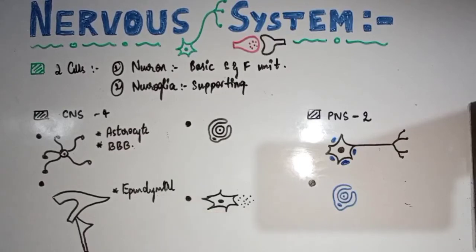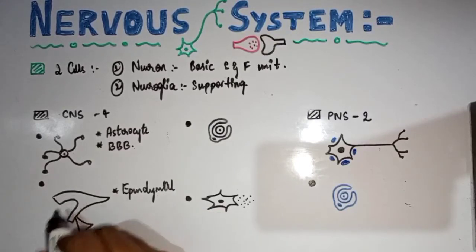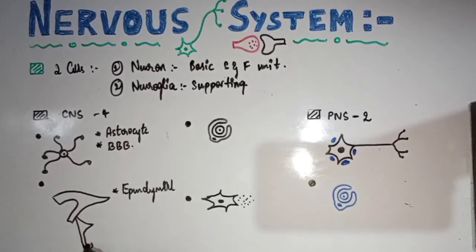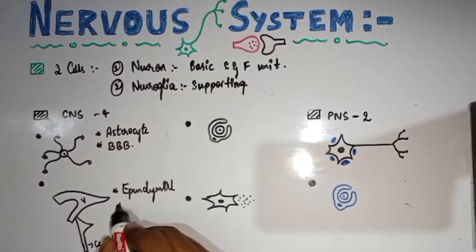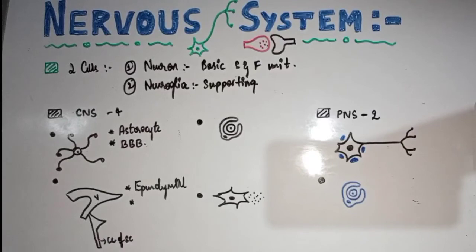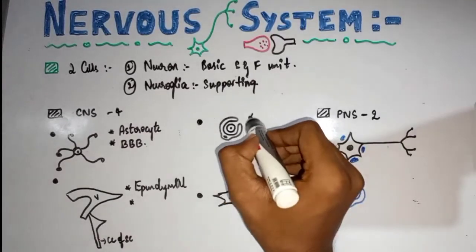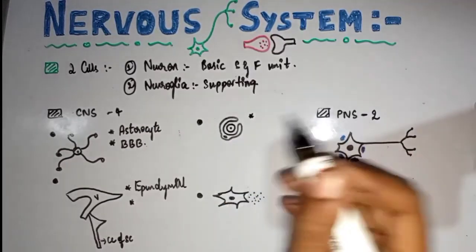Ependymal cells mainly line the ventricles and the central canal of the spinal cord. They line the inner walls of the lateral ventricles, third ventricle, and fourth ventricle of the brain.